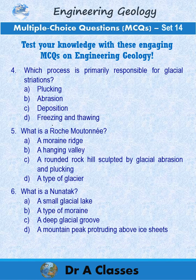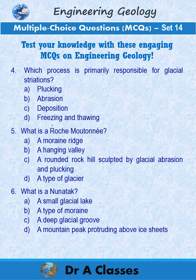Question 6: What is a nunatak? A. A small glacial lake. B. A type of moraine. C. A deep glacial groove. D. A mountain peak protruding above ice sheets.